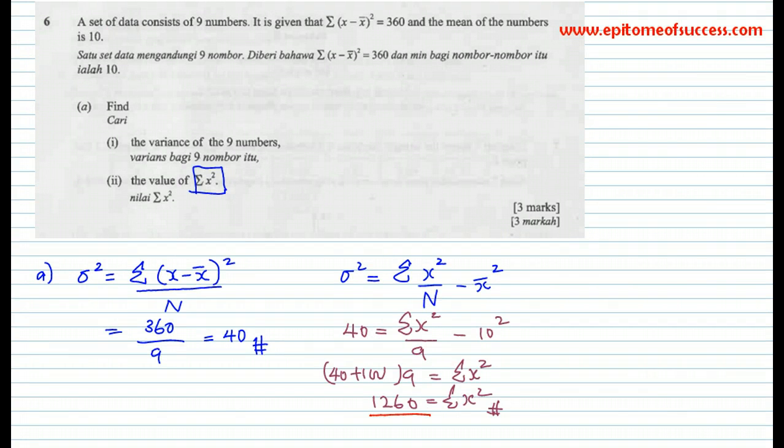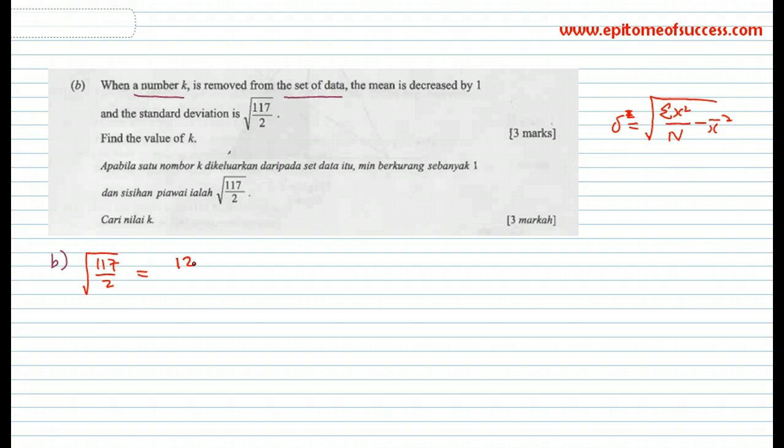The new standard deviation is √(117/2). That would be equal to... if a number K is removed from the set of data, then what would the variance be? The sum of data was what you found just now. Sum of the square of the data is 1260. Let's put it in here. That's 1260 minus K² over 8. The sum of the squares of data now is no longer 1260 because 1260 was for 9 numbers. Now there are 8. You've taken out K, so you will have to minus it with K² because K has been taken out. Minus, and the mean is decreased by 1. The mean earlier was 10, so now it becomes 9 squared, and you square root this. It is very crucial that you can understand the meaning and form an equation.